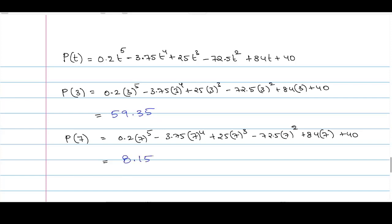Out of these two points, P(7) has the minimum value, which implies that t = 7 is the global minimum. This means Suraj should buy the stock after 7 hours. We had to find the value of t for which P(t) is minimum, and we got t = 7.